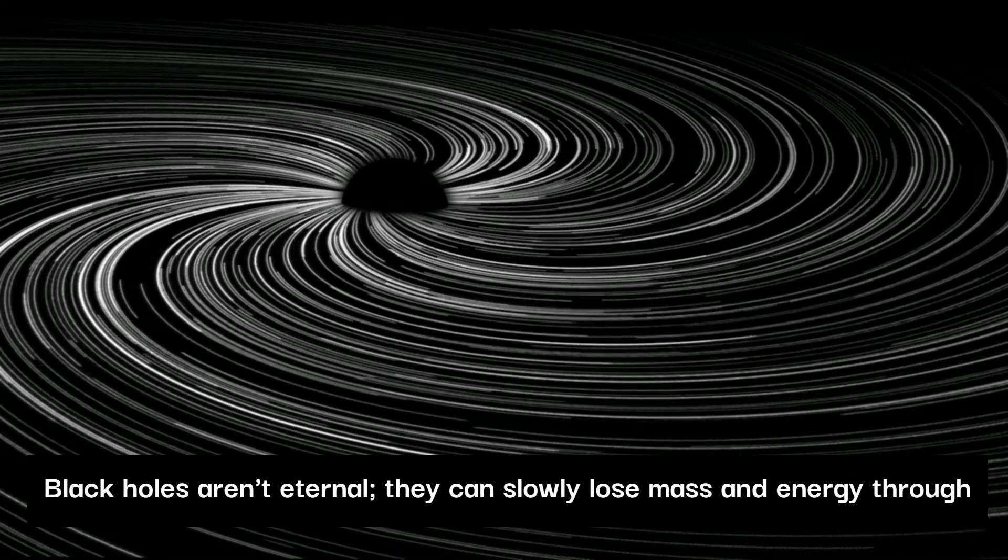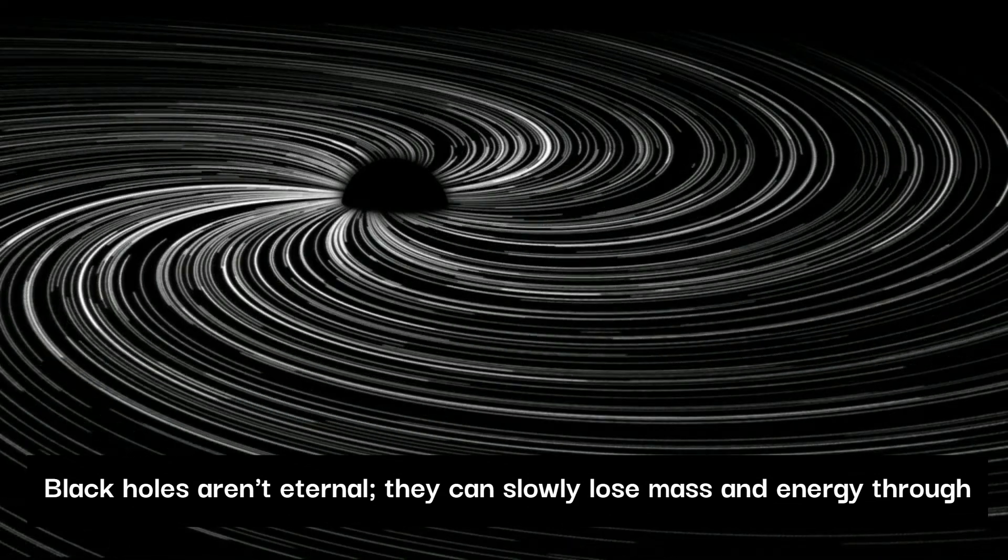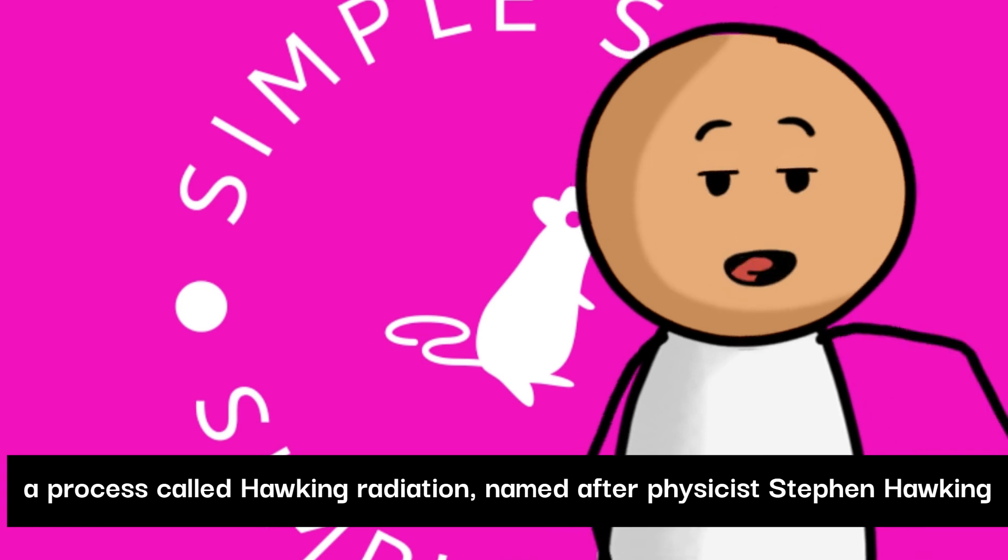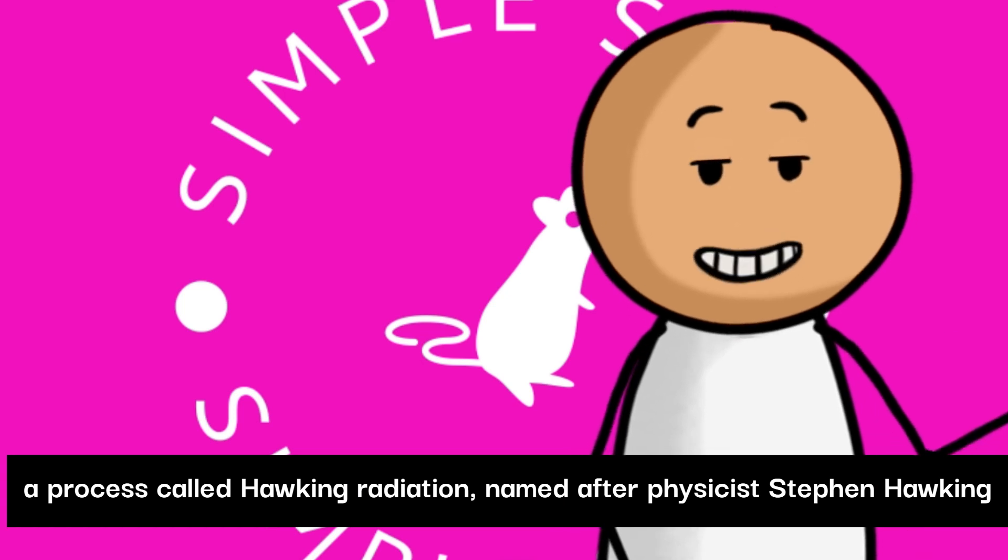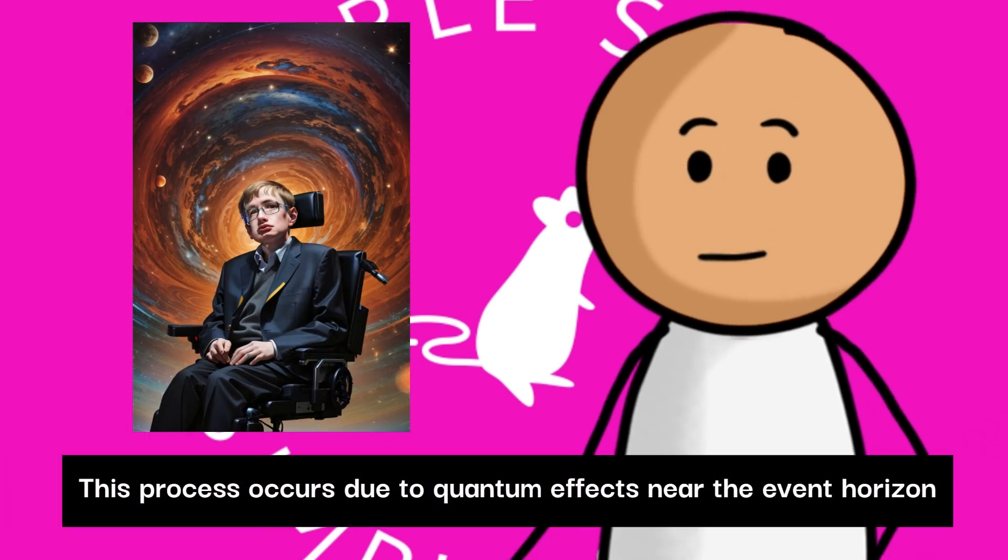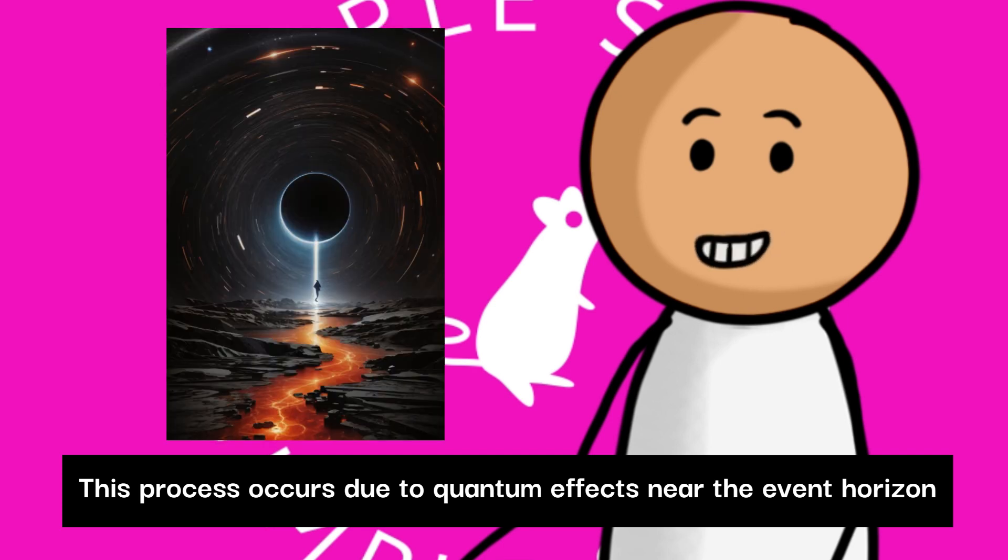Black holes aren't eternal. They can slowly lose mass and energy through a process called Hawking radiation, named after physicist Stephen Hawking. This process occurs due to quantum effects near the event horizon.